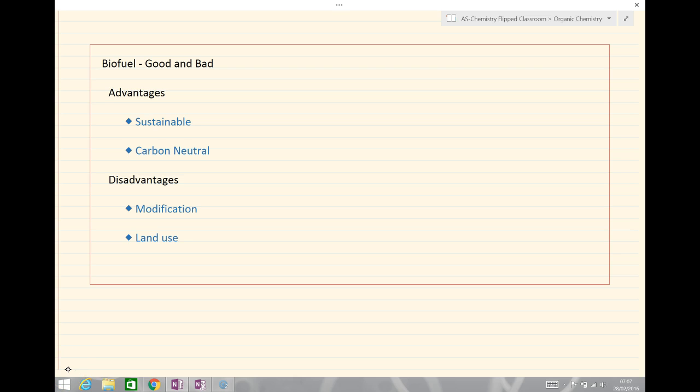Finally we'll look at biofuels advantages and disadvantages. We can describe them as sustainable and that's because the resources such as sugarcane, as we said before, is a renewable resource. In other words it's not made from fossil fuels and therefore we can always grow plenty more of the crop.